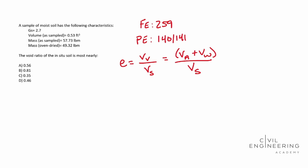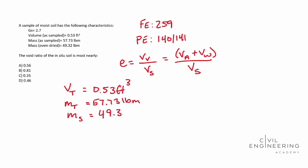Let's break down what it gives us. The volume as sampled is 0.53 cubic feet — that's our total volume, which includes water and air. Then it gives us a mass as sampled — that's our total mass of 57.73 pounds of mass. And then it gives us an oven-dried sample. After the water has evaporated, air doesn't weigh anything, but water does. So the oven-dried mass means we have the mass of our solids only — no water — and that is 49.32 pounds of mass.